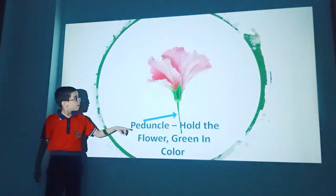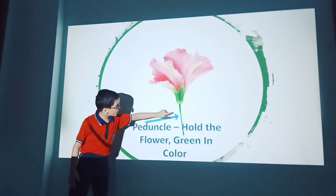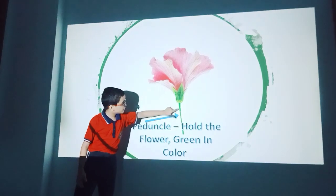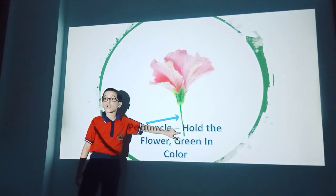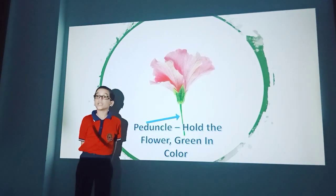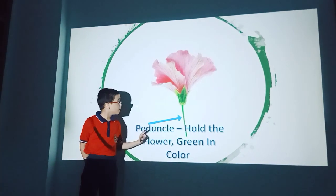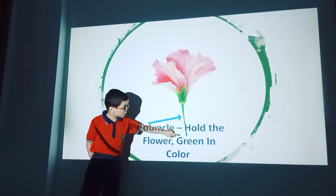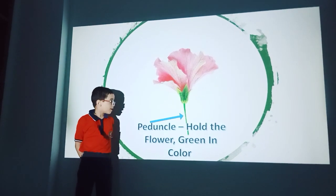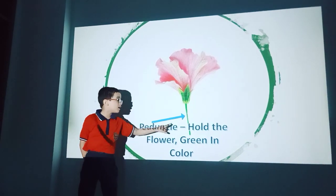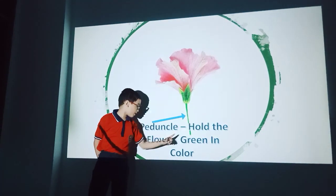First of all, we can see this green stick is called Peduncle. It is green in color. Peduncle supports the flower.